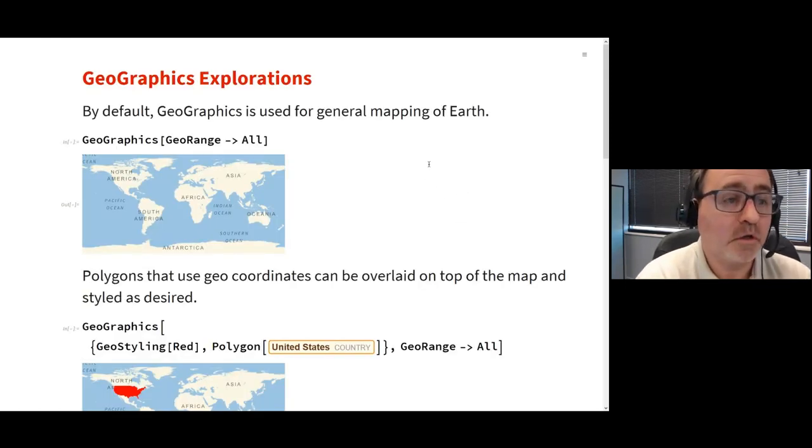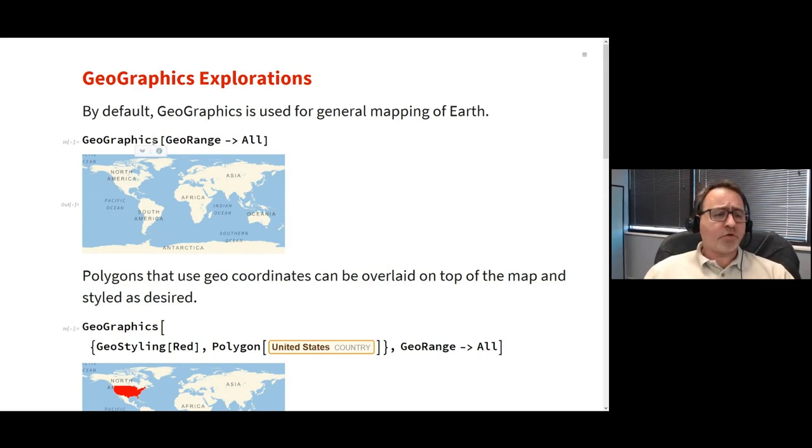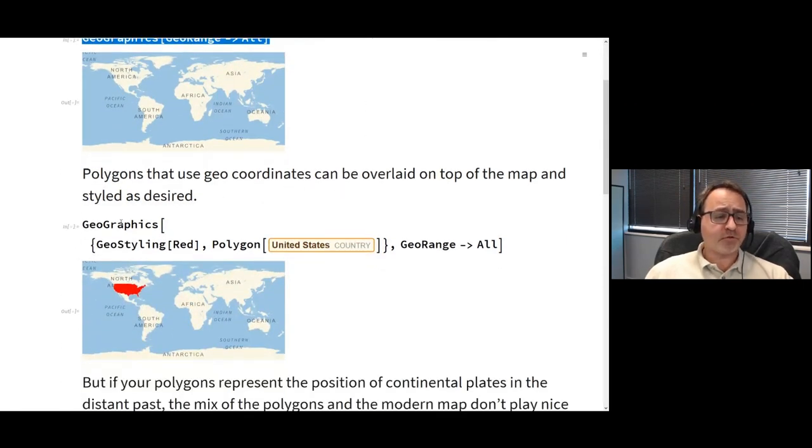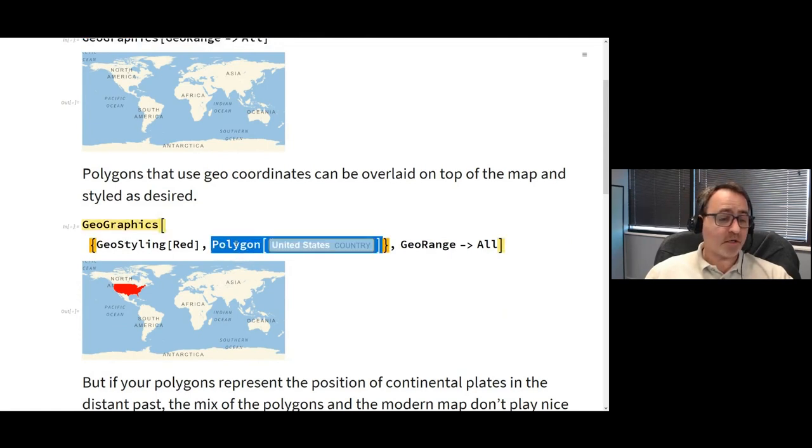We're going to explore some stuff with Geographics, another tool for exploring historical geology. As a primer, Geographics is set up to handle modern continents and data. Most of what you see is part of the Geo background. You get the modern continents: North America, Asia, Africa. For geological history though, we want to go back much further. As you may know, with Geographics you can overlay things like the United States as a polygon, styled red, overlaid on top of the Geo background.